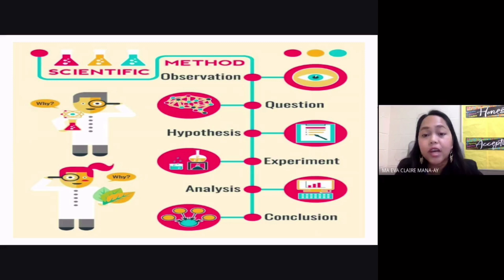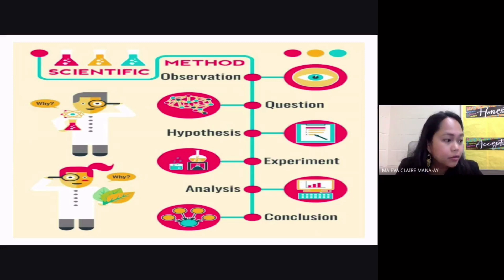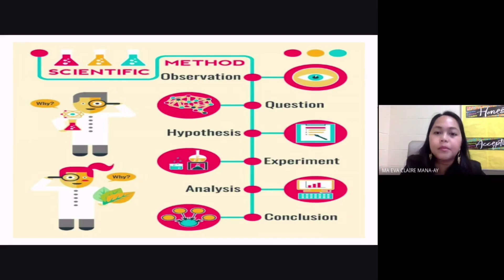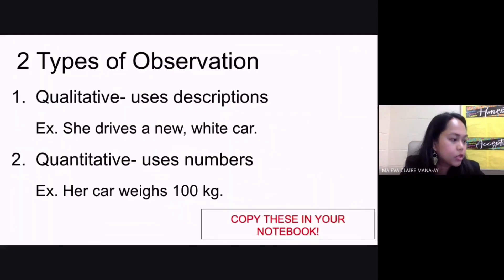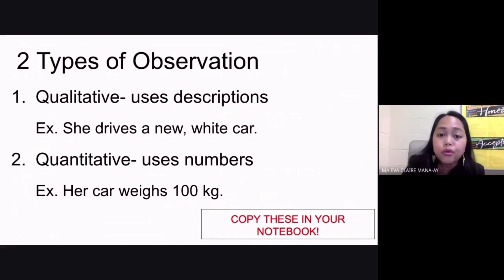When you say observation, you use your five senses to learn about things around you. Remember, there are two types of observation. The first one is your qualitative observation.